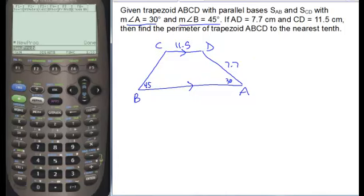And now you want to find the total perimeter. So in order to find the perimeter, we're going to rely on the fact that we're creating a 45-45-90 triangle here, and then we're forming a 30-60-90 triangle here.